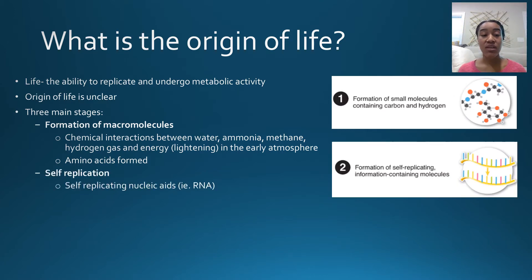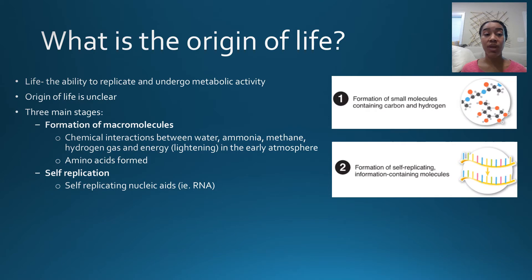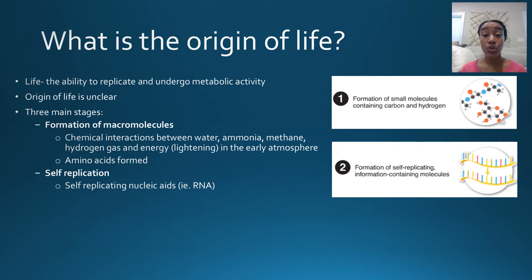The second thing that was predicted to have occurred is one of the main qualifications for life — the ability to replicate. There is some evidence that nucleic acids, some RNA, are able to actually undergo self-replication. So it's thought that self-replicating nucleic acids may have been the first self-replicating unit of life.